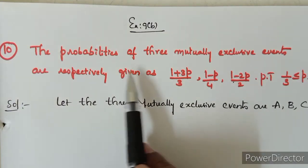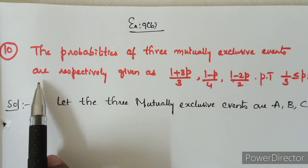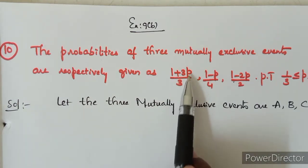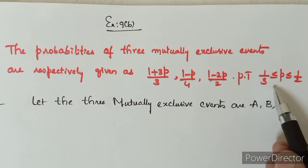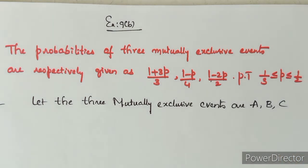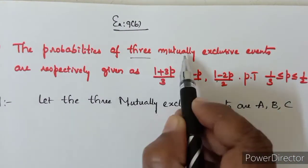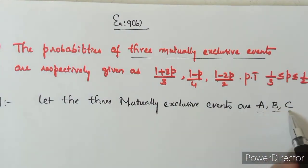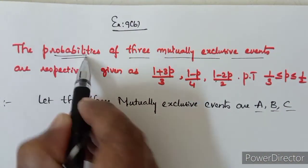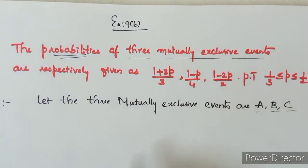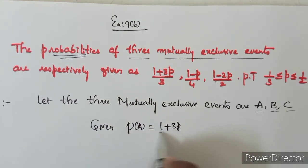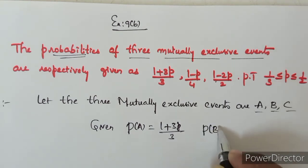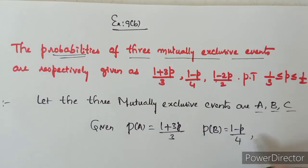The probabilities of three mutually exclusive events are respectively given as (1+3p)/3, (1-p)/4, and (1-2p)/2. We need to prove that 1/3 ≤ p ≤ 1/2. The three mutually exclusive events are A, B, and C. So P(A) = (1+3p)/3, P(B) = (1-p)/4, and P(C) = (1-2p)/2.